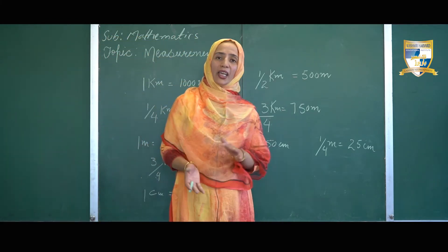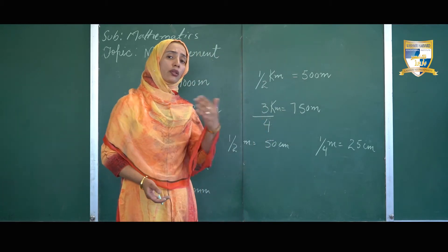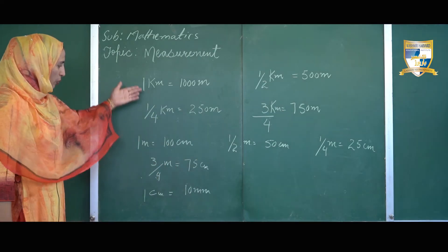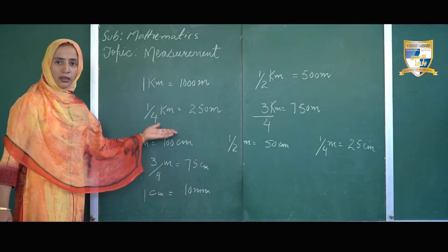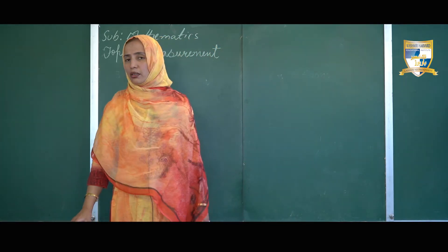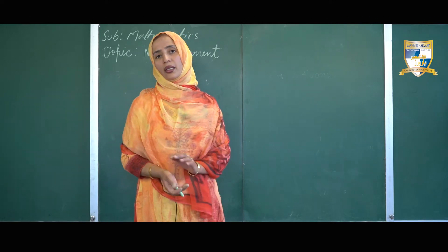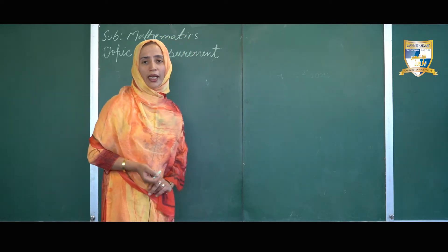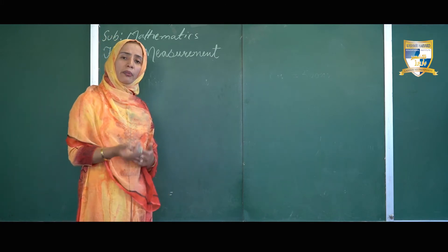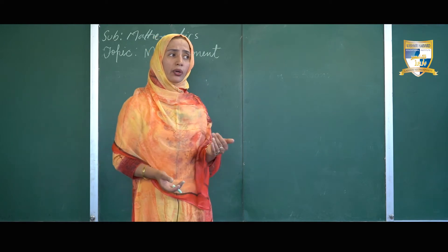So we can convert a higher unit of length into the smaller ones, and the smaller units of length into the higher ones. We can convert a higher unit of length into the lower unit simply by multiplication, and we can convert a lower unit of length into the higher unit by division.